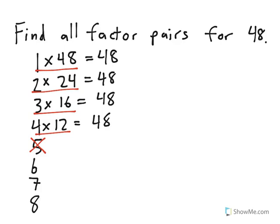How about 6? Well, 6 groups of 8 will equal 48, which means that 6 times 8 is a factor pair.